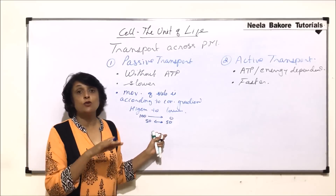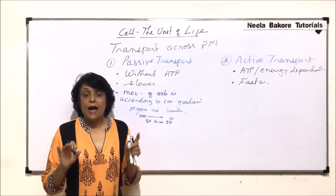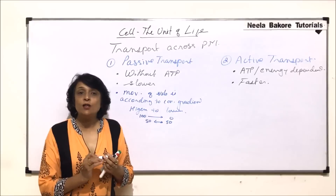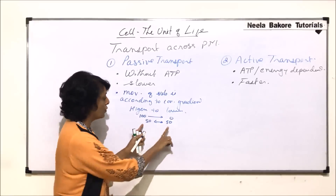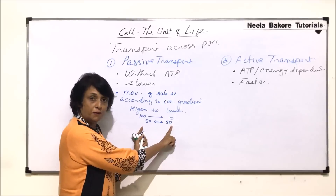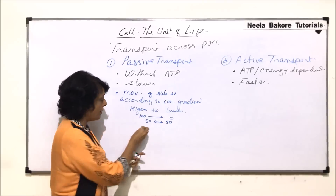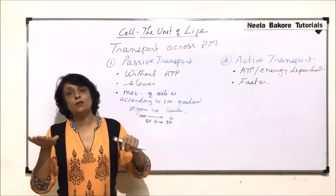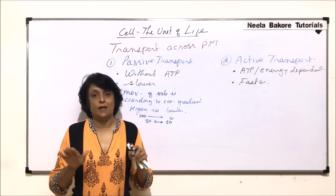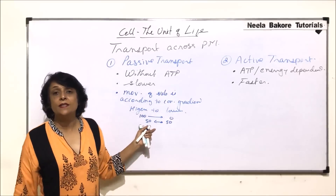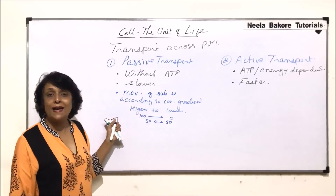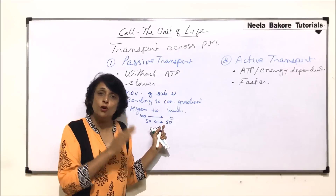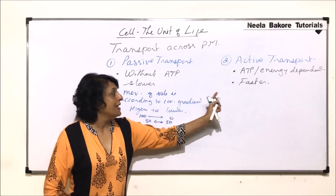Once 50-50 is reached, there is no gradient — equilibrium is achieved. After equilibrium, there is no net movement. Net movement means we would not see a change in the 50-50 distribution; if one particle moves one way, another comes back. So in passive transport, movement is always from higher concentration to lower concentration.